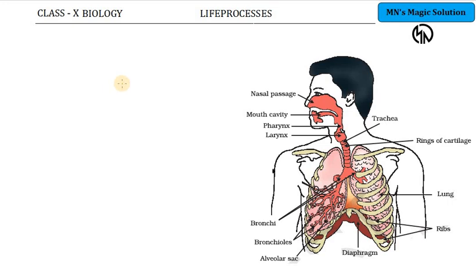Hi students, in today's session we are going to discuss how to draw the human respiratory system in an easier way. This is a usually asked 3 or 5 mark question. They will ask you to label the parts, either specific parts or they will mention which parts you have to label. Accordingly you have to make sure you have all the parts in your diagram.